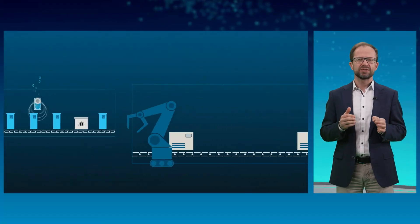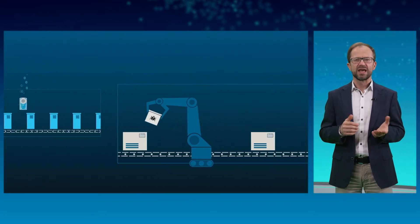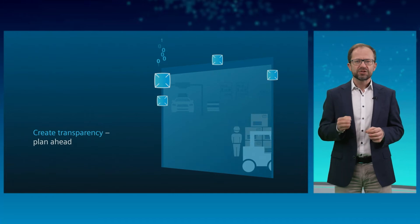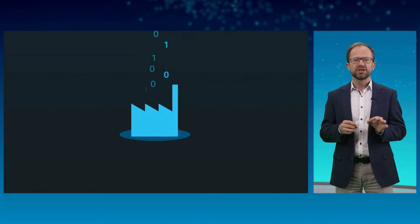But what if it turns out after delivery of goods that a production or test step was faulty? The digital production file can then be used to determine exactly where and when the error happened. Affected items can be precisely identified by the unique product ID. Together with the logistics data, it is possible to determine which customer has received which product. This enables a very focused recall with the lowest possible reputational damage and replacement cost.